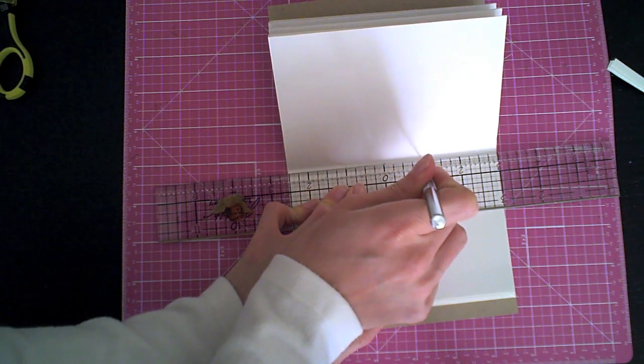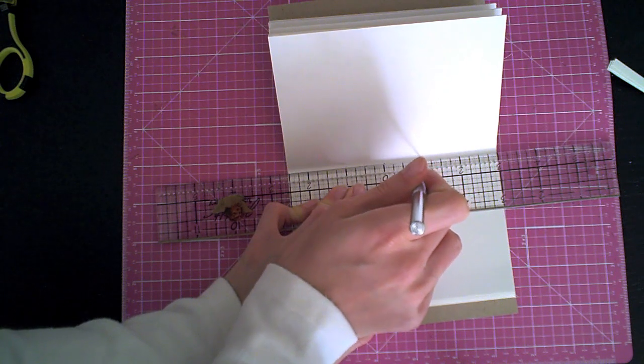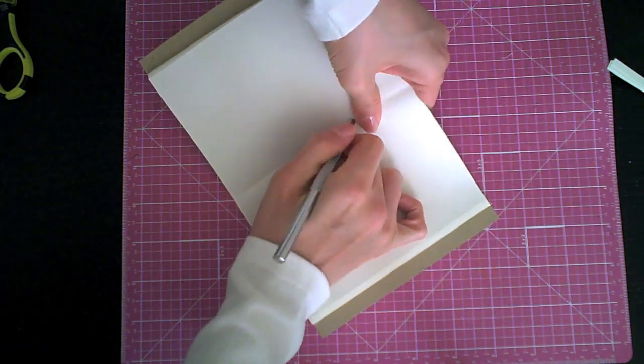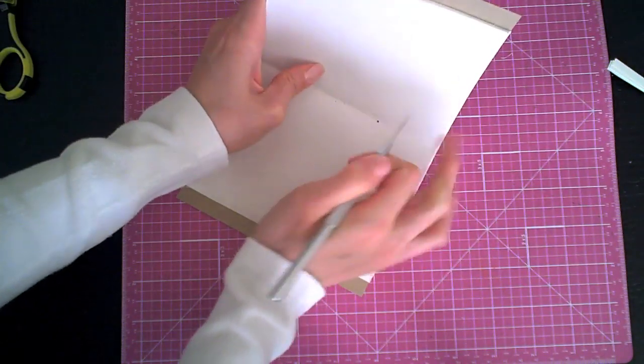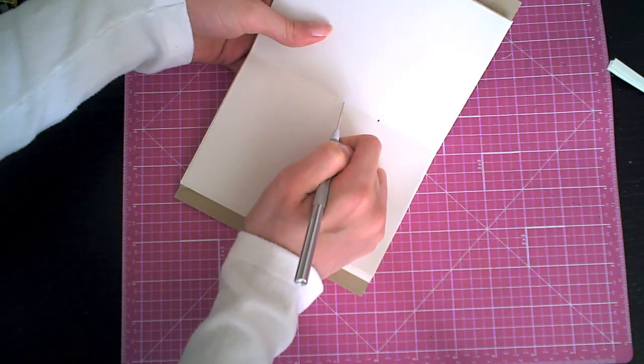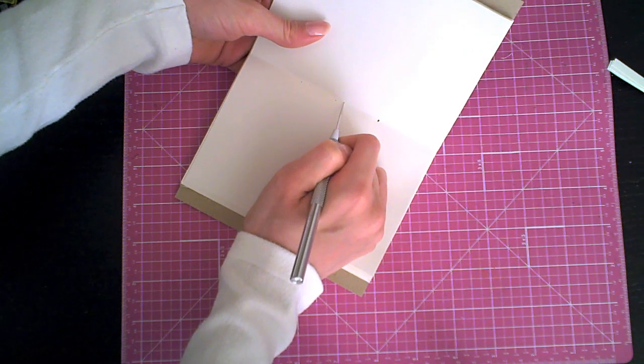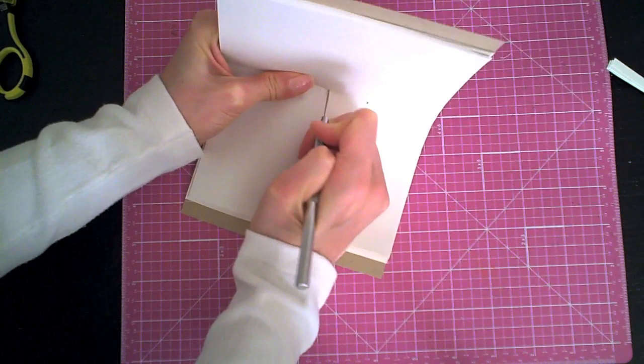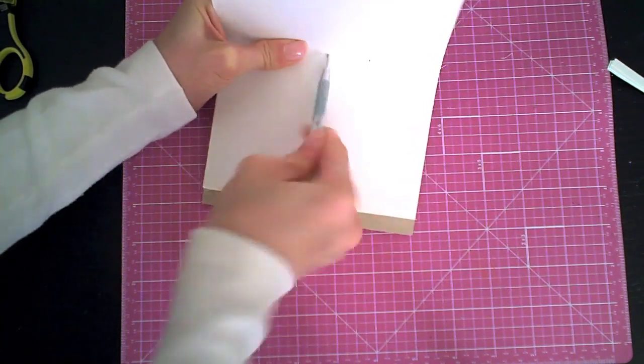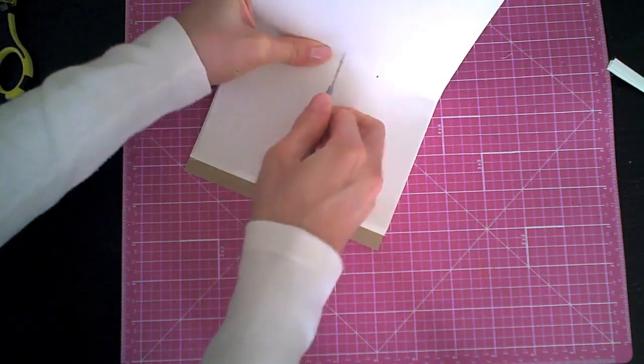Then with the paper piercer I pierce through all the papers in the stack and the cardstock cover. Let me just go through everything with the paper piercer.